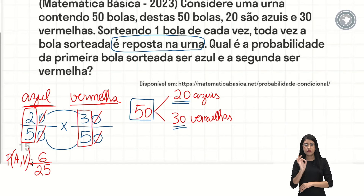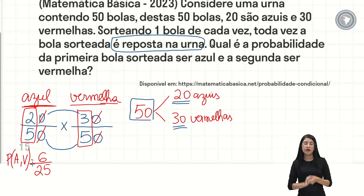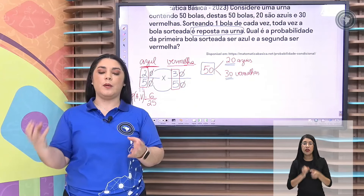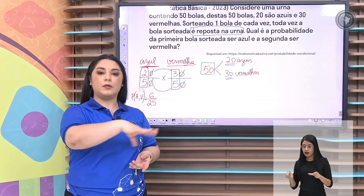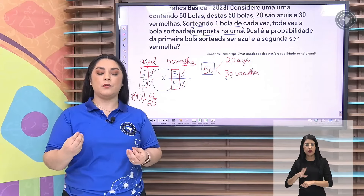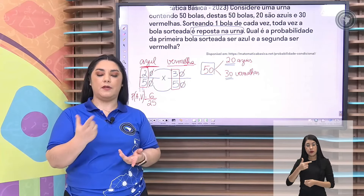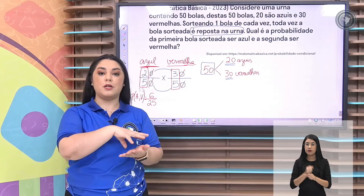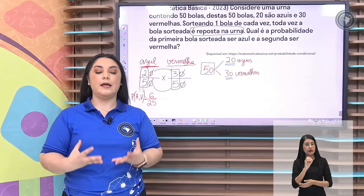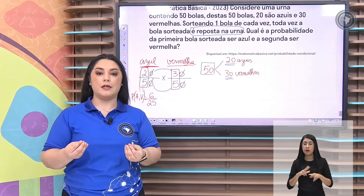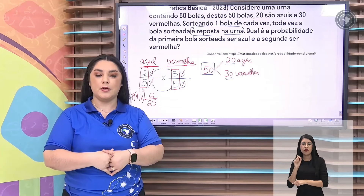Se você quiser o resultado em percentual, faz a divisão e multiplica por 100. Nesse exemplo a gente viu eventos independentes. Como que eu sei que eles são independentes? Porque está dizendo na questão que eu retiro uma bola e devolvo de novo. Então, não vai mudar a quantidade de bolas que tem dentro da urna, ou seja, o espaço amostral não vai mudar. O segundo evento de retirar a bola vermelha não vai depender de eu ter retirado a azul ou não, porque o espaço amostral é o mesmo. Por isso calculei a probabilidade de cada evento separadamente e multipliquei os resultados.